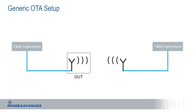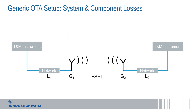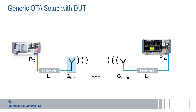Here is a generic OTA setup. We see a DUT and there's an over-the-air link to another antenna. The first problem is: how can we measure the transmission of our DUT if the calibration plane on one side is on a cable or conducted, and on the other side it's in the air? To tackle this, let's separate the setup into individual parts. We have a network on either side — typically a cable, but it can be any passive or active components — and then we have two antennas with a certain gain. In the center we see the free space path loss, which is the actual loss over the air.